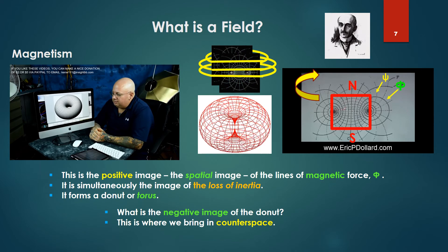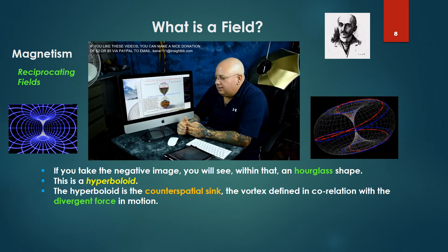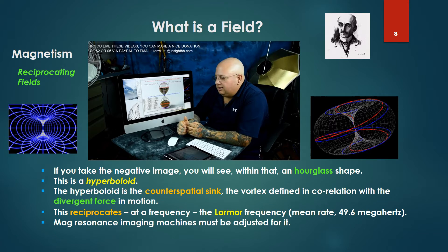The question is: what is the negative image of the donut? This is where we bring in the counter space. If you take the negative image, you'll see within it an hourglass shape — the hyperboloid. The hyperboloid is the counter-spatial sink, the vortex defined in correlation with the divergent force in motion. This reciprocates at a frequency called the Larmor frequency, with a mean rate of 49.6 megahertz. Magnetic resonance imaging machines have to be adjusted for this particular frequency.